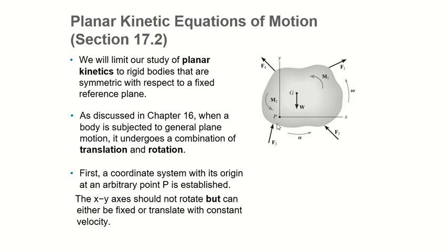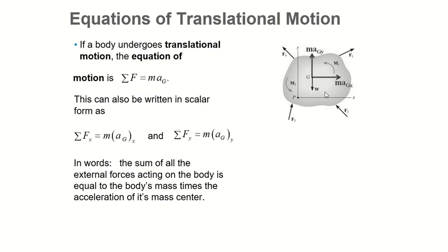The xy axes can either be fixed or translate with constant velocity. It might seem like rotation, but in translation we still have curved movement going along the lines. We are studying body motion in a coordinate system — here we have two axes, x and y, because we're in translation motion.